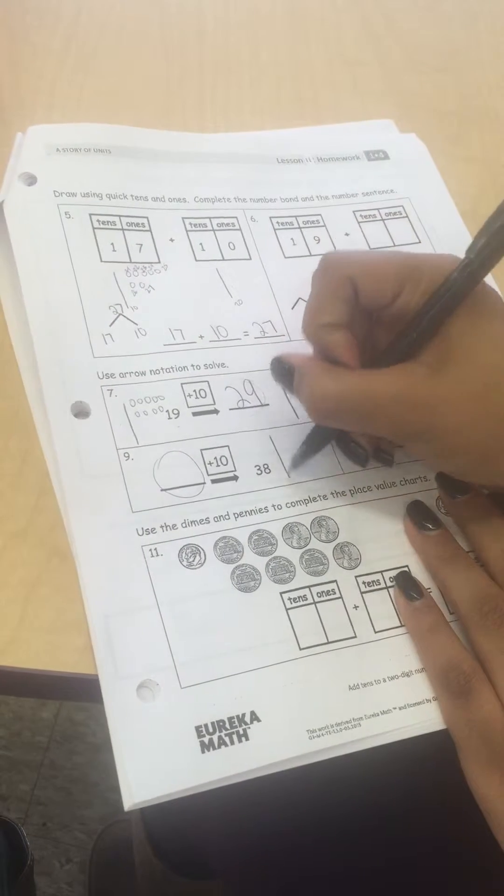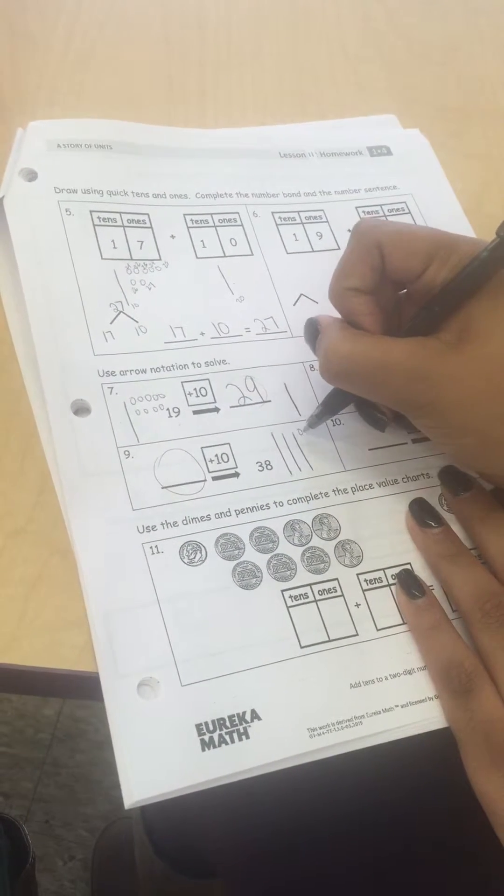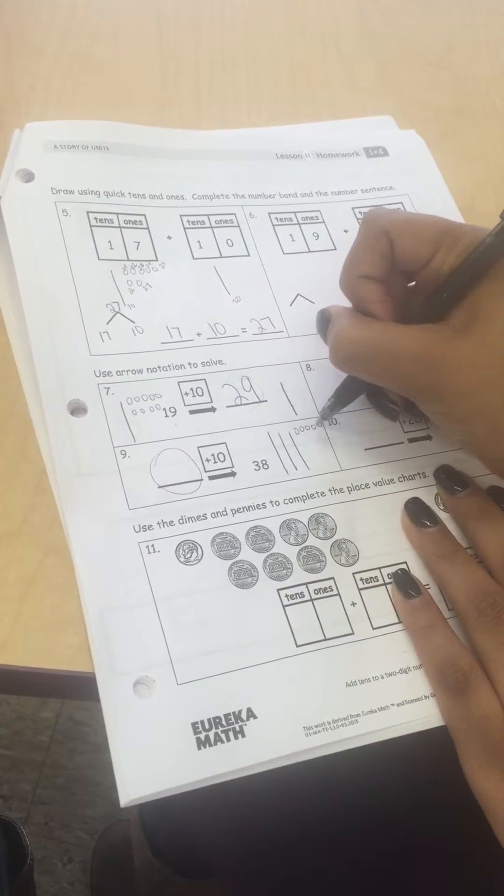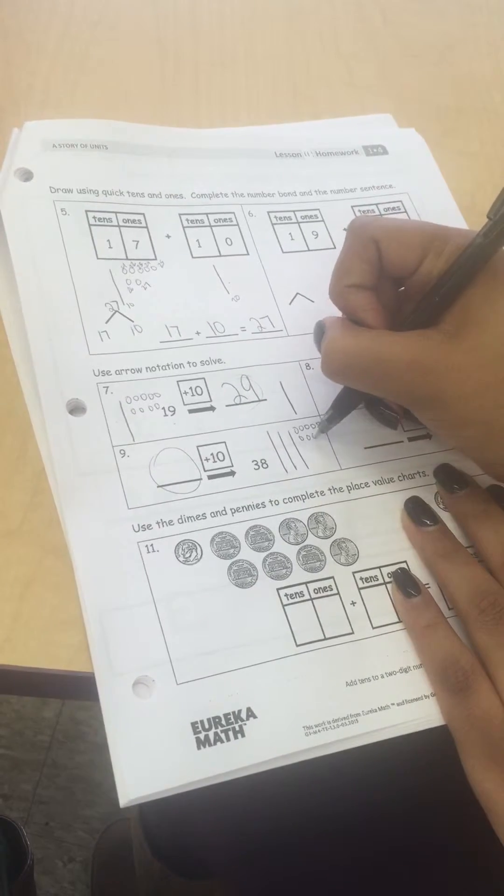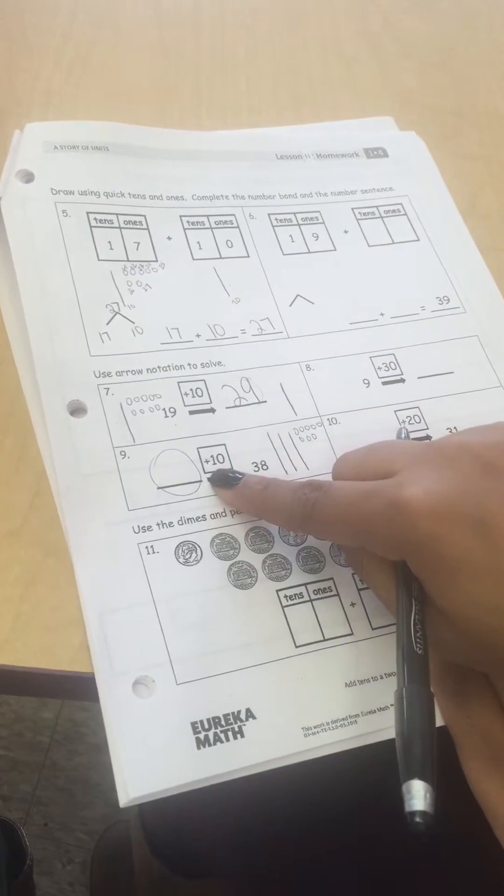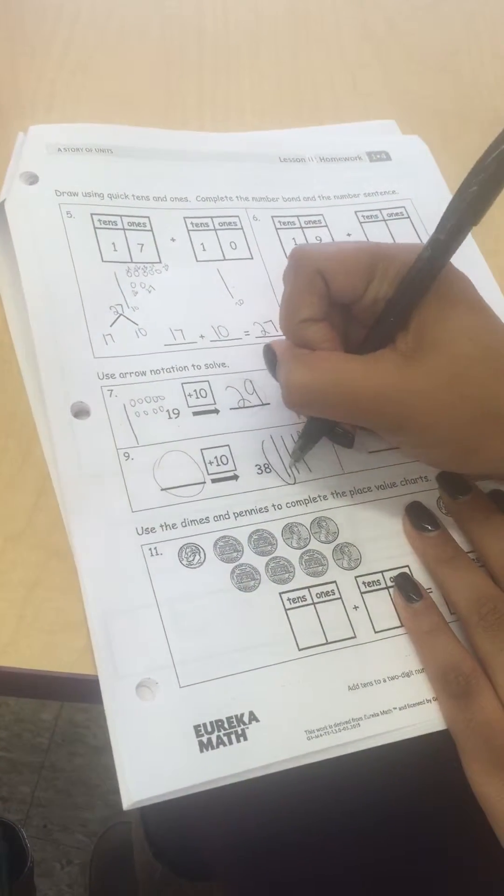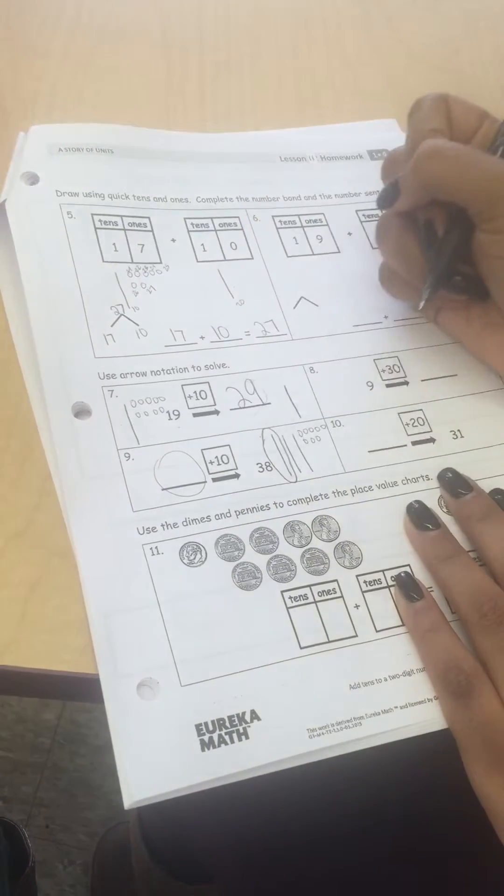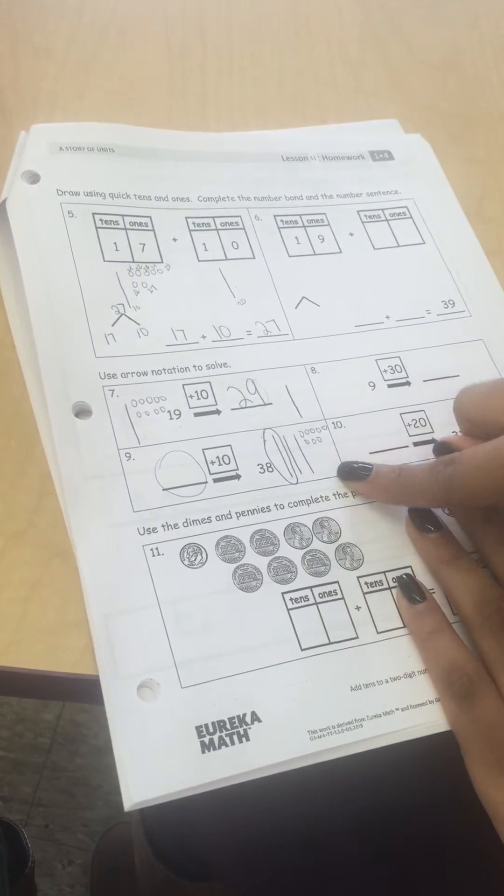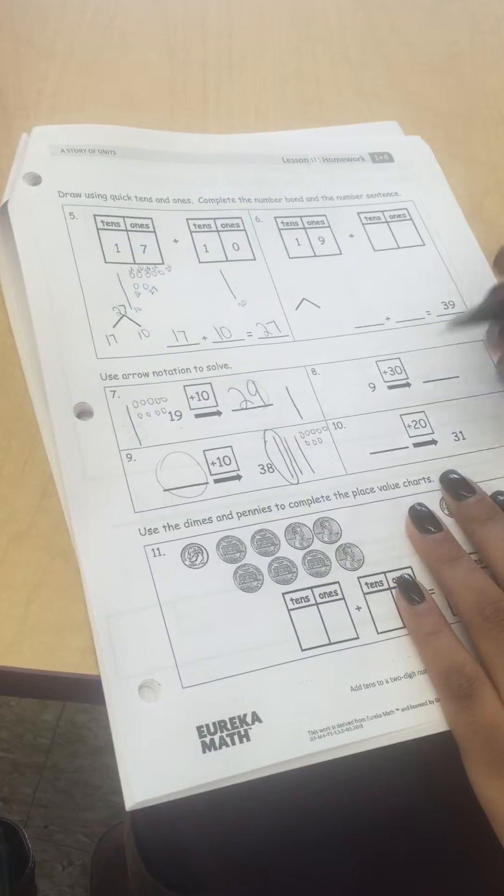So my total is 38: 10, 20, 30, 31, 32, 33, 34, 35, 36, 37, 38. My part that I know is 10, so I'm just going to circle that to show that that's the part that I do know.